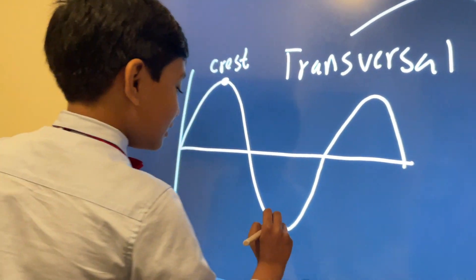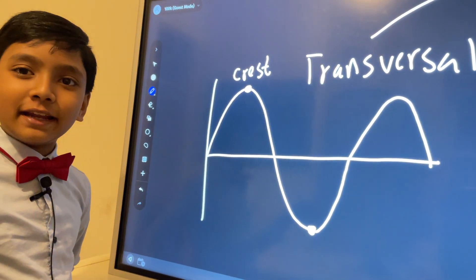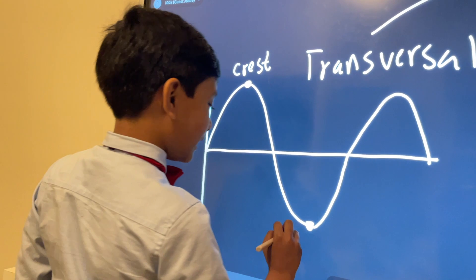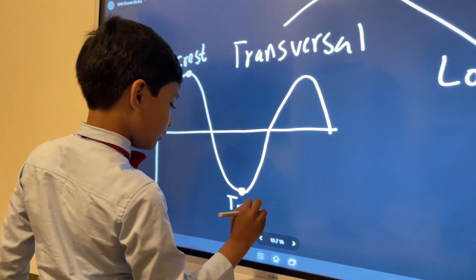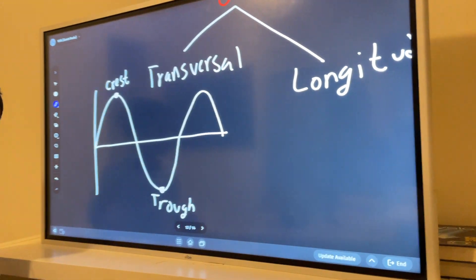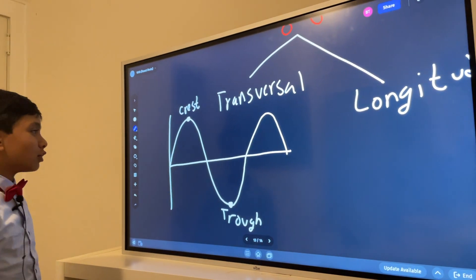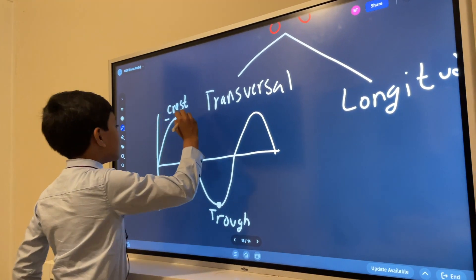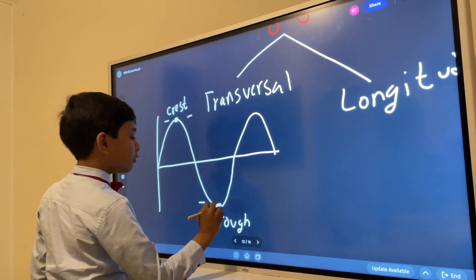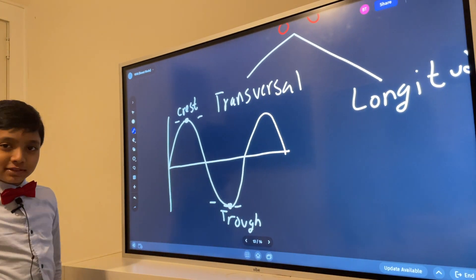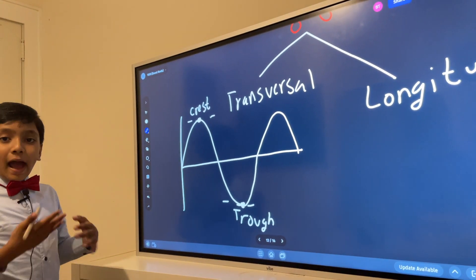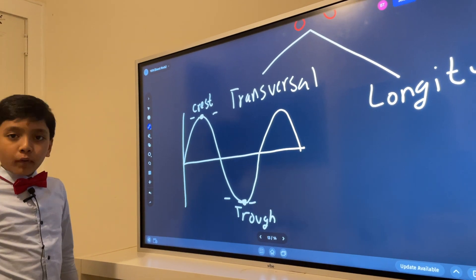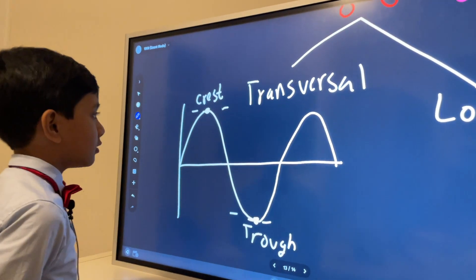Now think of this as the 45th president of the United States. It's a trough. Americans can remember this by saying Trump, but whatever. So the crest is the peak. The trough, gotta refrain from saying Trump, is our low point or our valley.